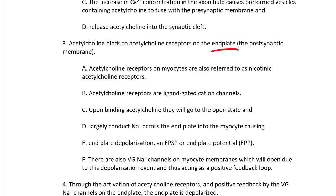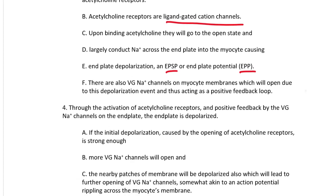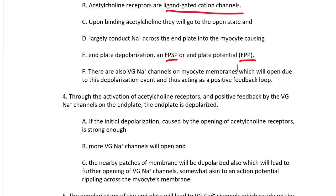Acetylcholine receptors on myocytes are also referred to as nicotinic acetylcholine receptors. These receptors are ligand-gated cation channels. Upon binding acetylcholine, they open and largely conduct sodium across the end plate into the myocyte, causing end plate depolarization — an end plate potential, which is a type of EPSP that only occurs on a myocyte's membrane. There are also voltage-gated sodium channels on myocyte membranes which open due to this depolarization event, acting as a positive feedback loop.